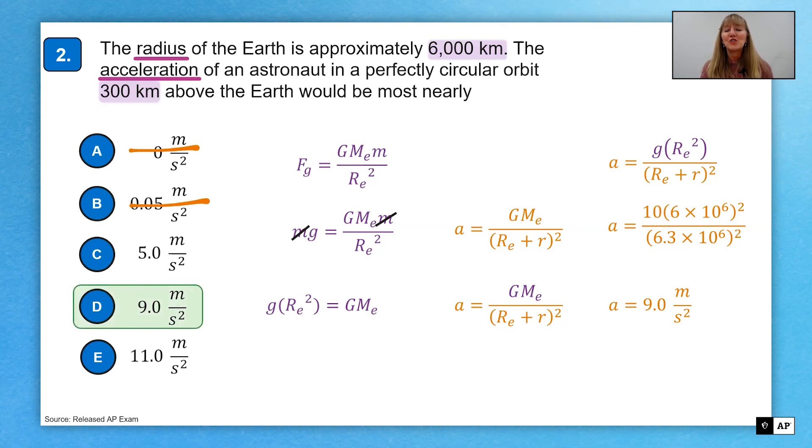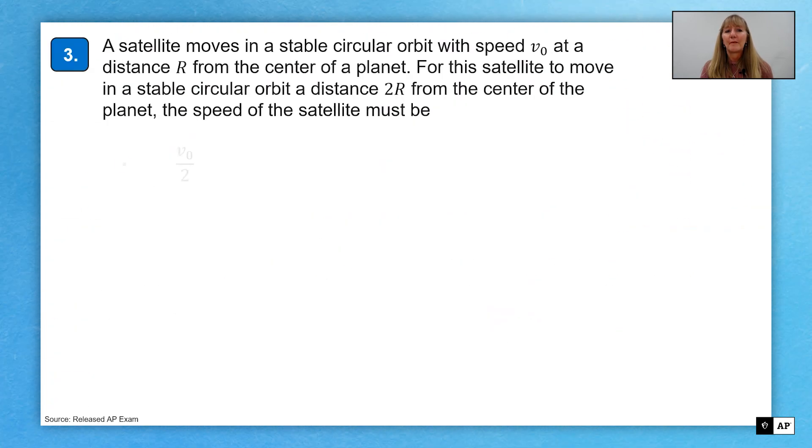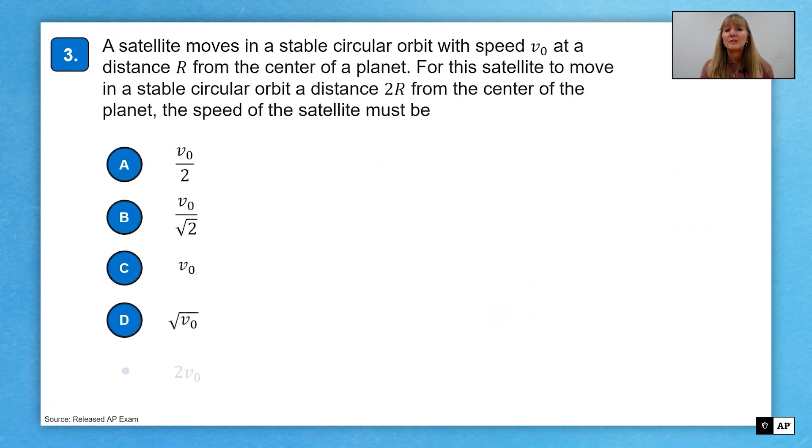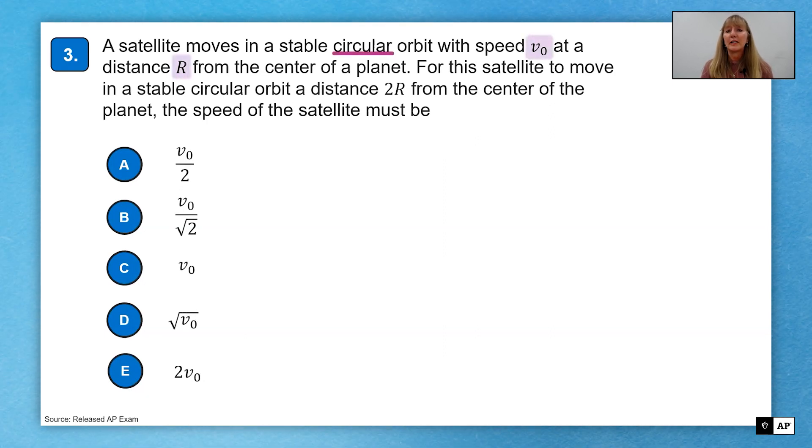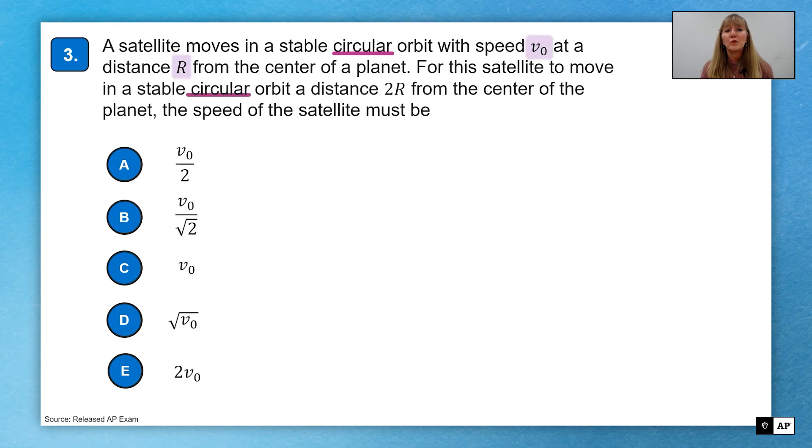All right, let's try question three. Once again, a satellite is moving in a circular orbit with a speed V naught at a distance r from the center of a planet. Now this satellite is moved still in a circular orbit, but has a new distance of two r from the center of the planet. What we want to do is calculate what is the speed required to make that true.